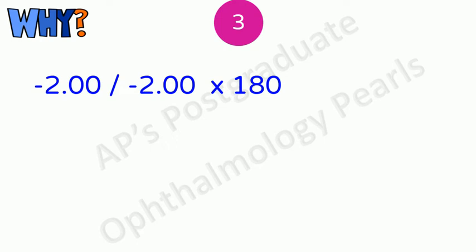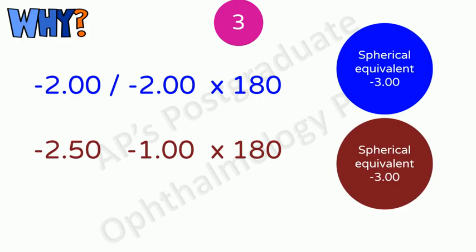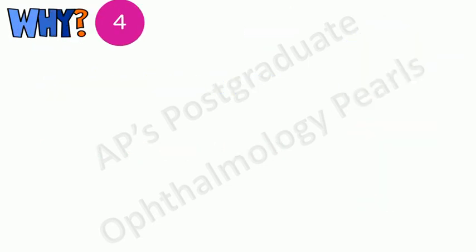Let us say you want the cylinder to be not more than one diopter. Since you have reduced by one diopter half of this that is minus 0.5 should be added to the sphere. So minus 2 plus minus 0.5 is minus 2.5. Of course the axis remains the same. The spherical equivalent of both these prescriptions is minus 3.